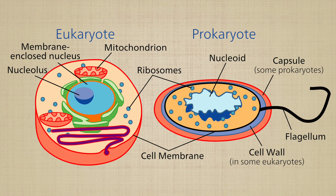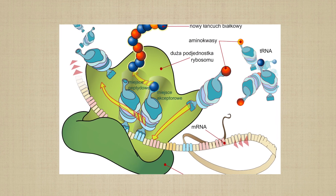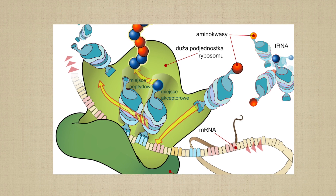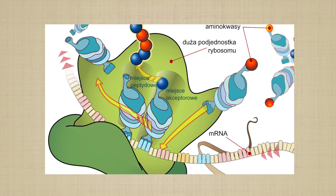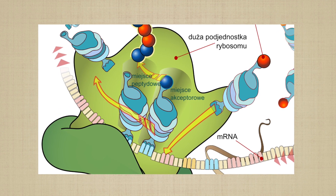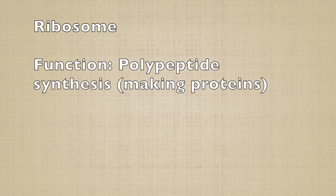Of all the organelles, some are what we call universal — meaning they're present in both eukaryotic and prokaryotic cells. The first one I want to talk about is the ribosome. The ribosome is made up of two subunits, and while they differ slightly between eukaryotic and prokaryotic cells, their function is the same: they are the site of polypeptide synthesis, meaning proteins are made there — something we'll look at in a lot of detail later in the course.